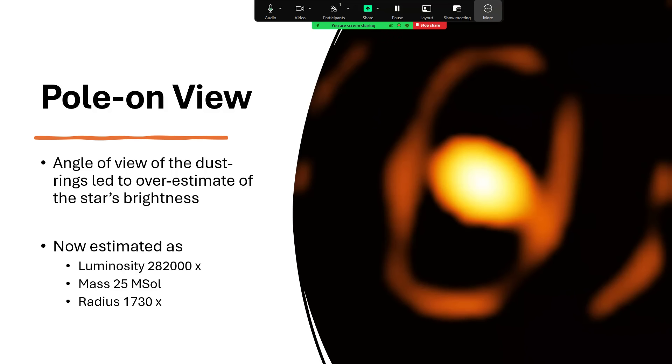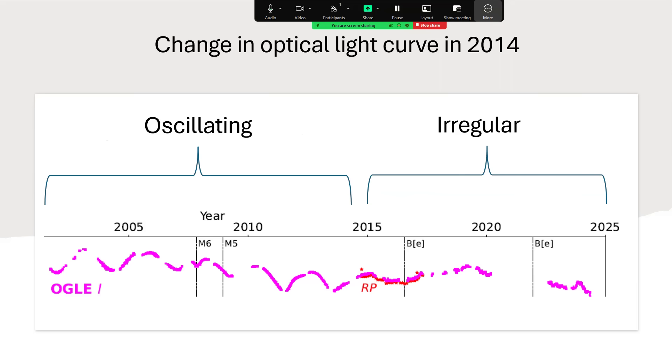But interestingly, we've seen what I said in the title slide, stellar evolution in action. And we can tell that from the light curve. This is from the Ogall experiment. And you can see the purple trace of how bright the star was back from the early 2000s up to date.